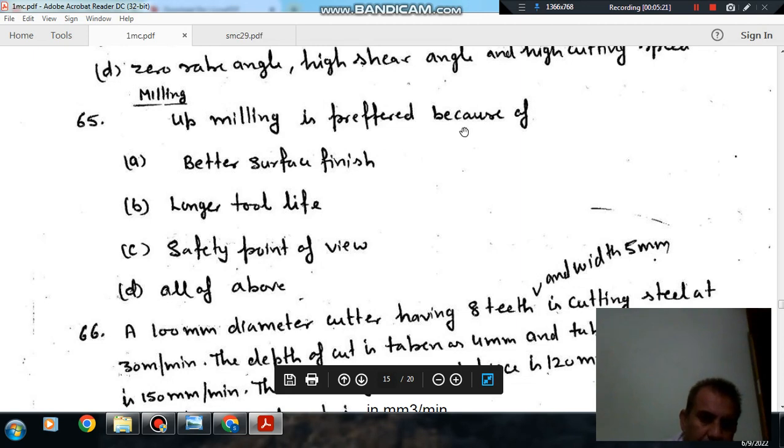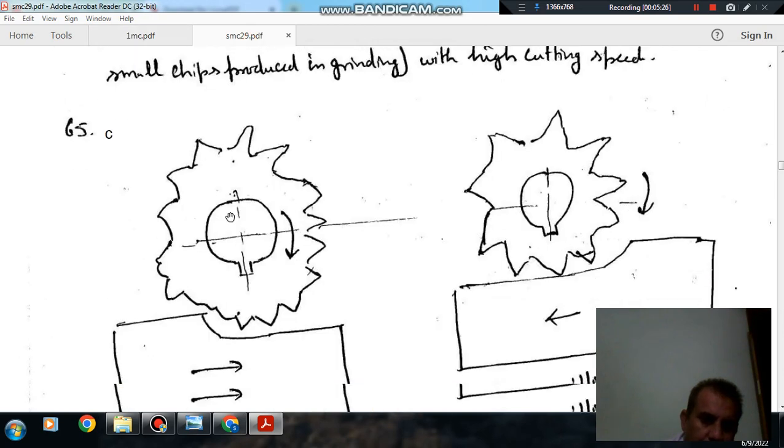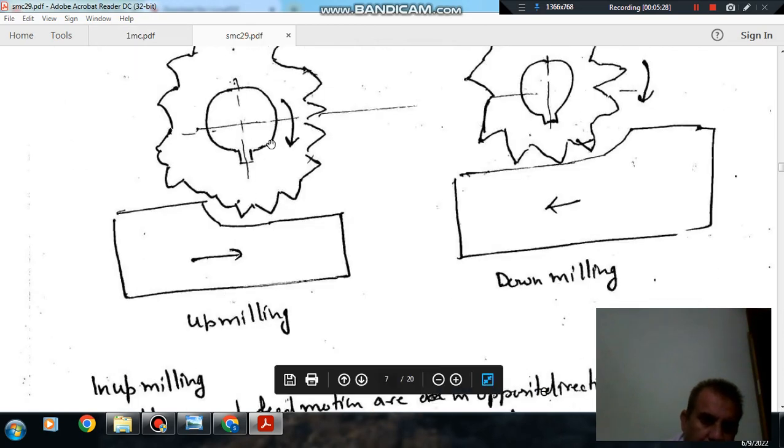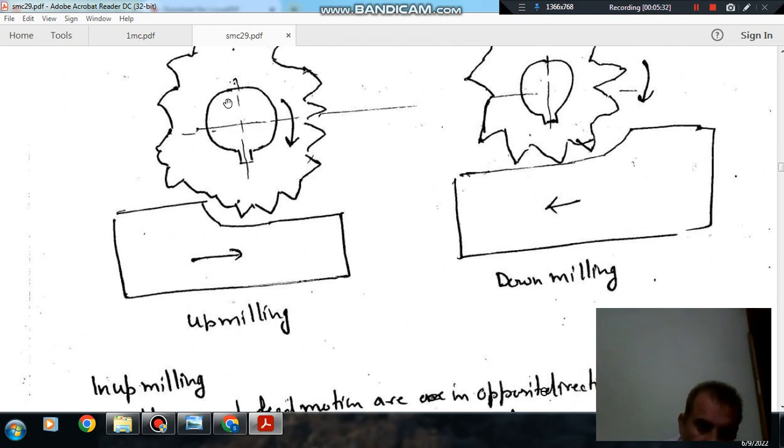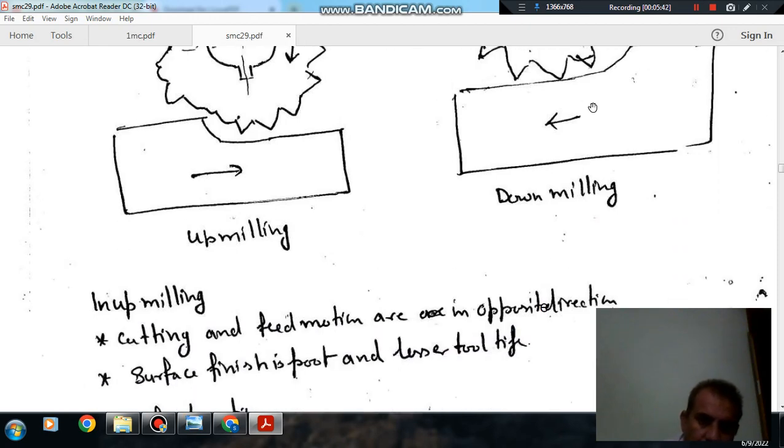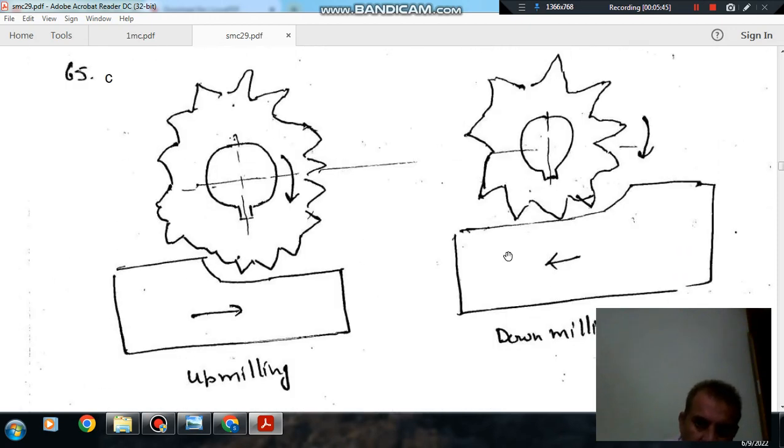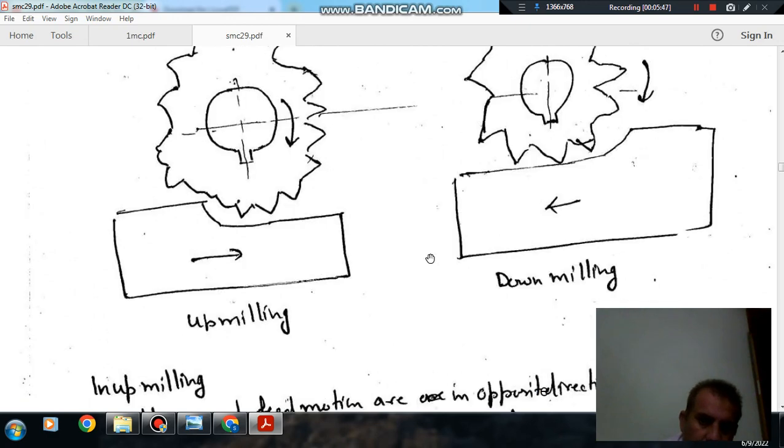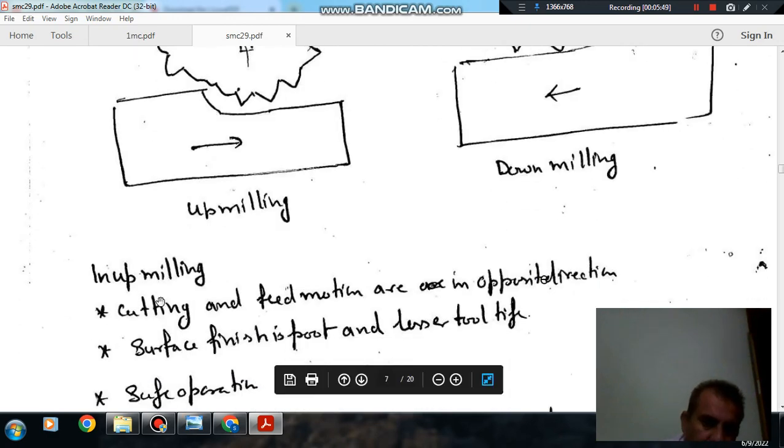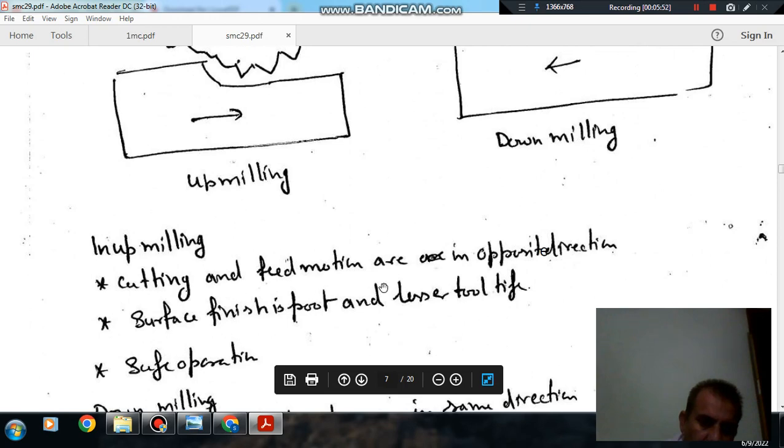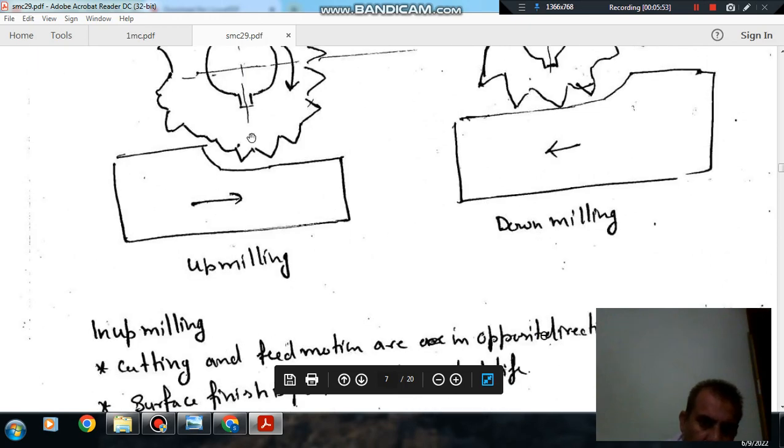So up milling is preferred because of safety point of view. Because this is your up milling, here the direction of cutting and direction of rotation is in opposite direction. And here the direction of cutting and direction of rotation is in same direction. So this can drag the work piece, so it is not safe. So other characteristics of up milling are cutting and feed motion are opposite directions.